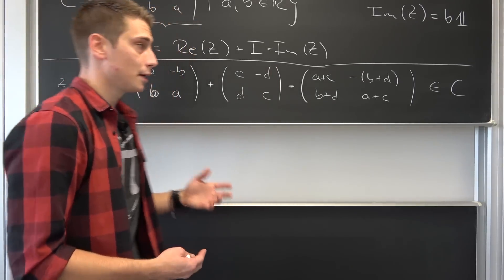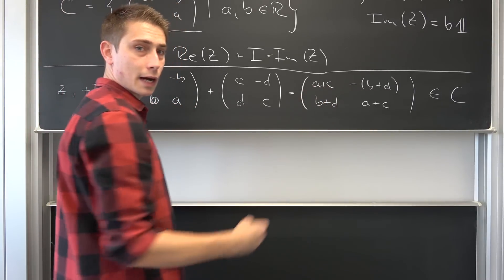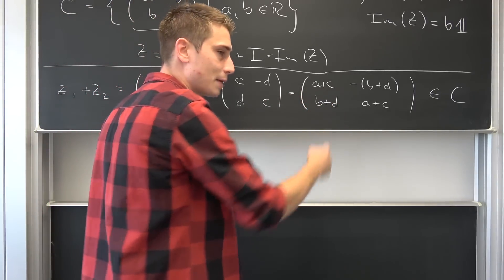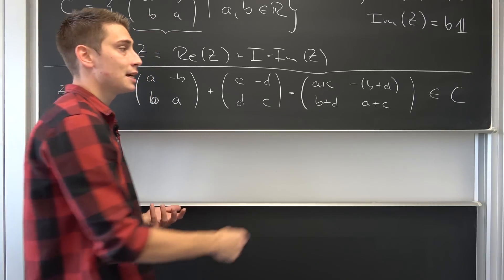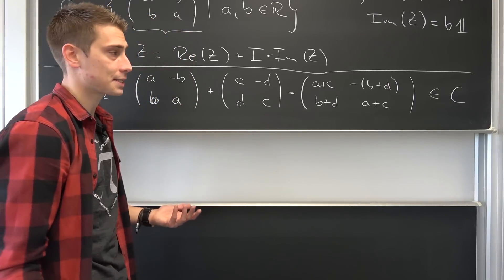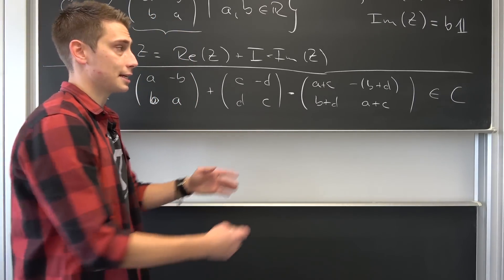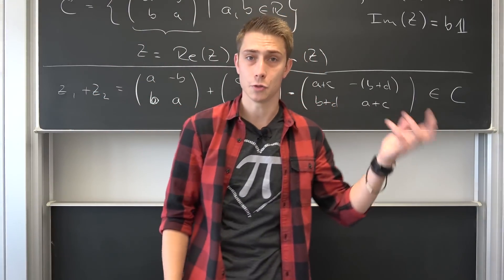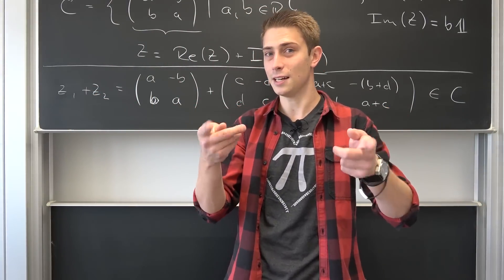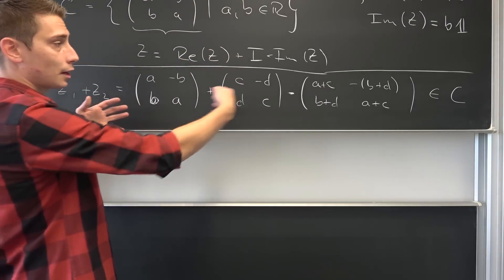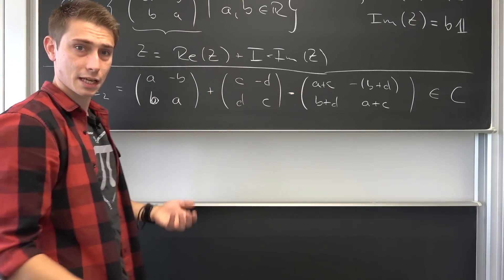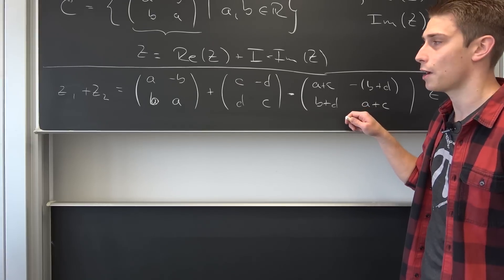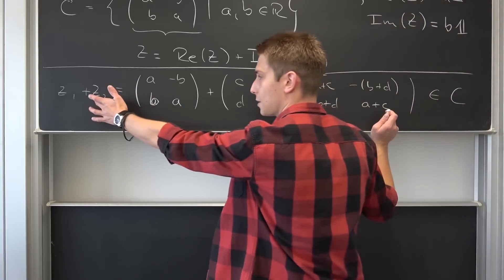The same thing holds for subtraction. Real numbers form a group under addition, meaning each element has an inverse, so even if we have a minus C it's yet again in the real numbers, and overall this is yet again out of the complex numbers. Also trivially, a+C equals C+a — the real numbers are abelian and commutative — meaning Z1 plus Z2 equals Z2 plus Z1.